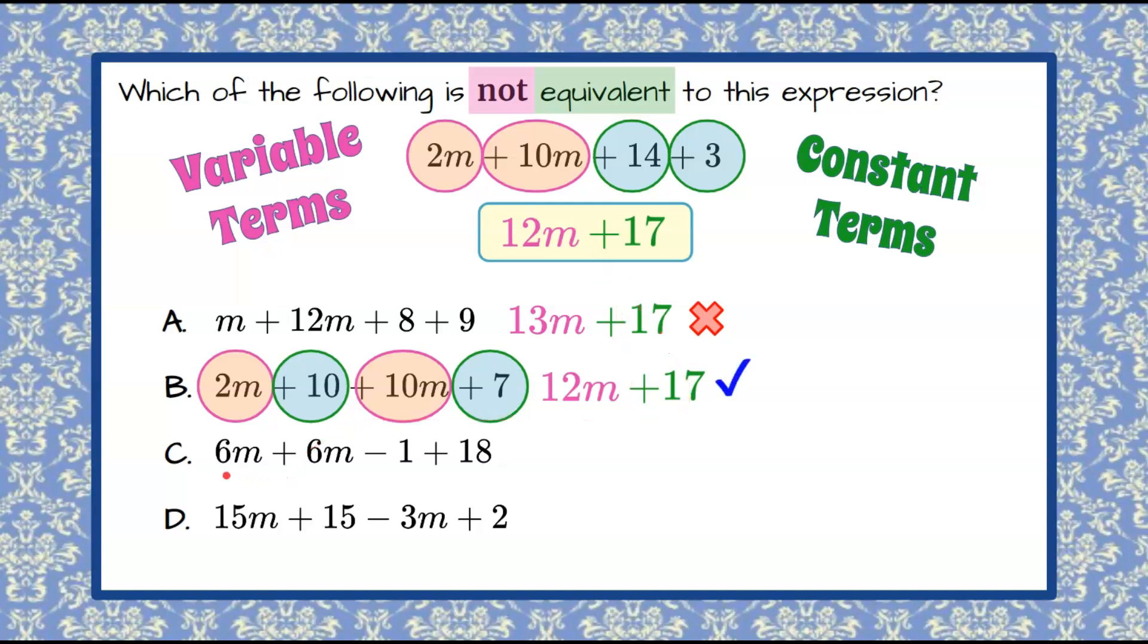Then in C, we have like variable terms 6m plus 6m, which is 12m. Here we have negative 1 plus 18, which is 17, and it also checks. In D, we have 15m and negative 3m, which is 12m. 15 subtract 3 is 12. Then we have like constant terms, 15 and positive 2, which is 17, and that also checks.